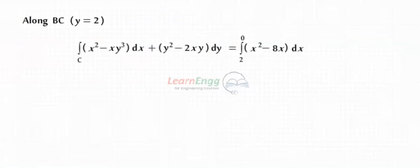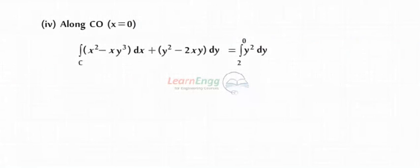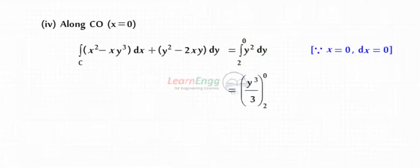Along BC, y equals 2. By substituting these values, we get 40 by 3. And along CO, x equals 0. By substituting these values, we get minus 8 by 3.